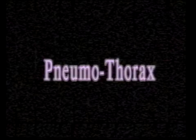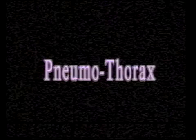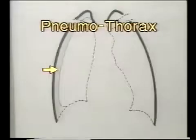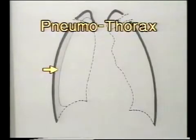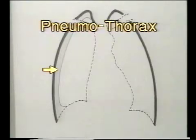Pneumothorax is a collection of air in the pleural cavity. It produces a partial collapse of the lung and is seen as a uniformly black peripheral shadow outside the lung border with absence of vascular markings.